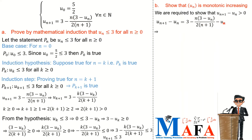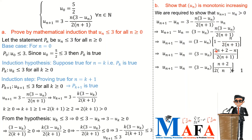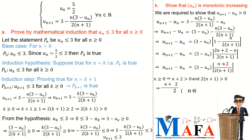We look for the expression of u_{n+1} minus u_n. u_{n+1} is the given recurrence, minus u_n. We group (3 minus u_n) together — we have it in two places, so we factor it out. Factoring out (3 minus u_n) gives one term from the first part and the remaining term from the second. Then u_{n+1} minus u_n simplifies by finding the LCM, which is 2(n+1). Combining like terms: 2n minus n gives n, plus 2, so we get (n+2) in the numerator.